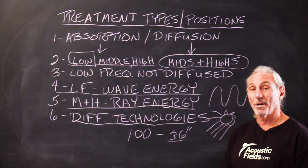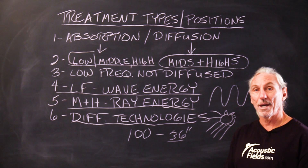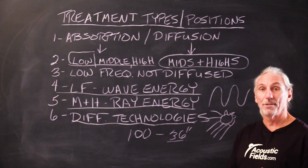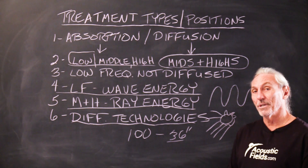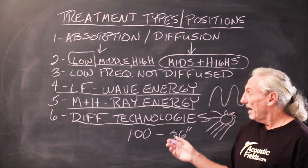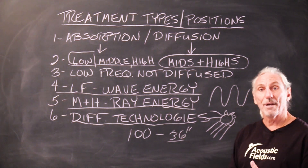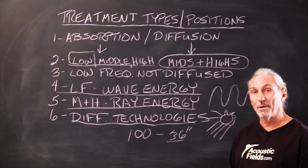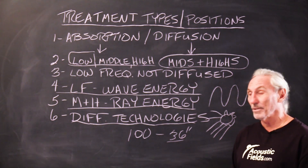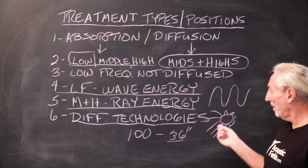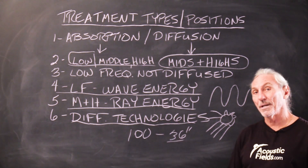Let's talk about some of those technologies. For low frequency, we have diaphragmatic — which is the most powerful and the one we use — then there's Helmholtz, and then there's membrane. Those are pressure-activated technologies. Then for middle and high frequencies, or ray energy, we have diffusion and we have open-cell foam. Building insulation is used a lot but we do not talk about or use that in any of our projects, for many reasons. Pressure and ray energy are different and we need different technologies to treat them.